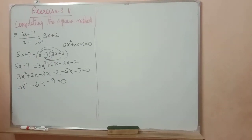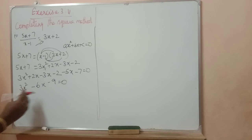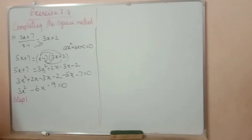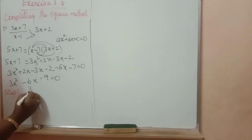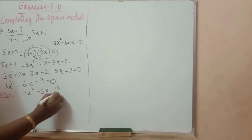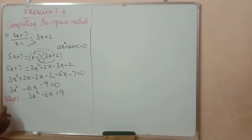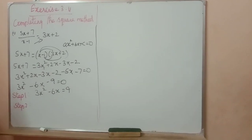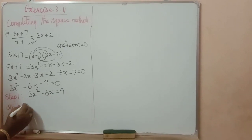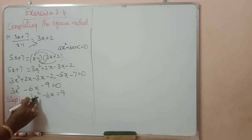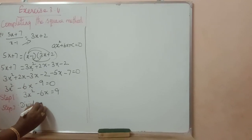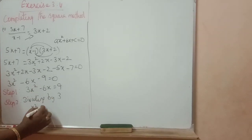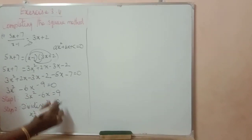Now we are going to use the completing square method. Step 1: bring the constant to the right-hand side. Step 2: coefficient of x square should be 1. So, divide the equation by 3, because the coefficient of x square is 3. If you divide by 3, you will get x square minus 2x equal to 3.